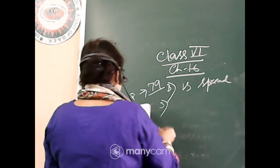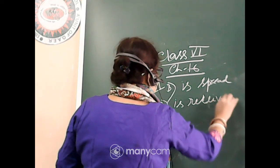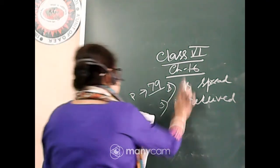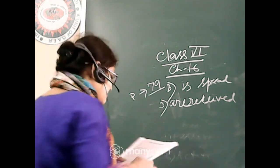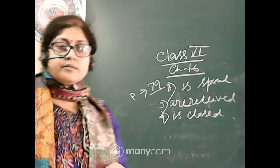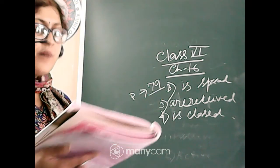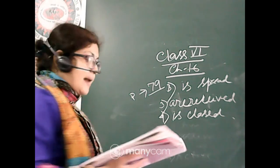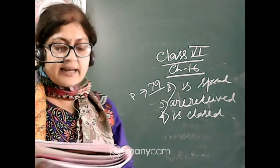Number three: the guests are received — note that 'guests' has an S so we use 'are.' Number four: the market is closed due to the disturbance of the area.